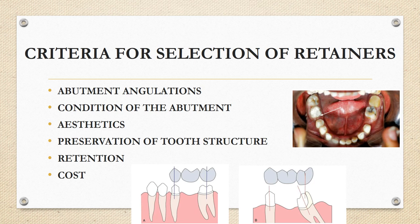For preservation of tooth structure: partial veneer preparations are more conservative than full veneer preparations. The buccal or facial surfaces of the teeth should be preserved for natural aesthetics. The choice should be made depending on all factors for the longevity of the prosthesis. Etched cast retainers can also be considered as a conservative alternative.